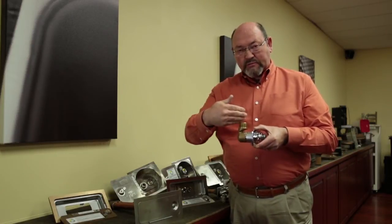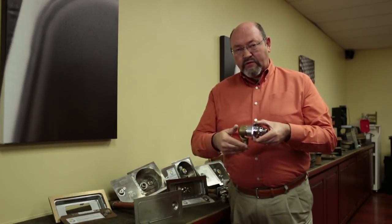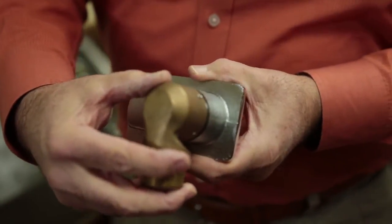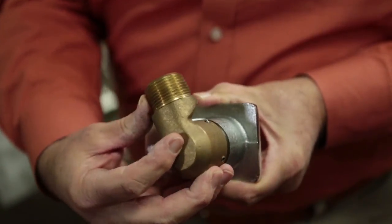So you can bring the water supply down from the ceiling, in from the side, or up from the floor. And the union elbow allows you to rotate it in any direction. And this hydrant will fit into a 2x4 wall space, including the elbow.